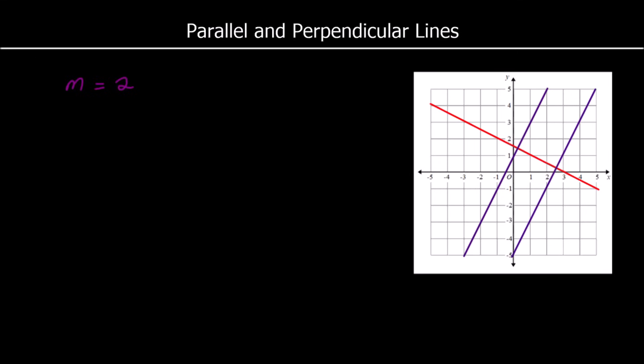Perpendicular lines meet at a 90 degree angle — they meet at a right angle. There's a right angle between the purple line and the red line, so they are perpendicular.